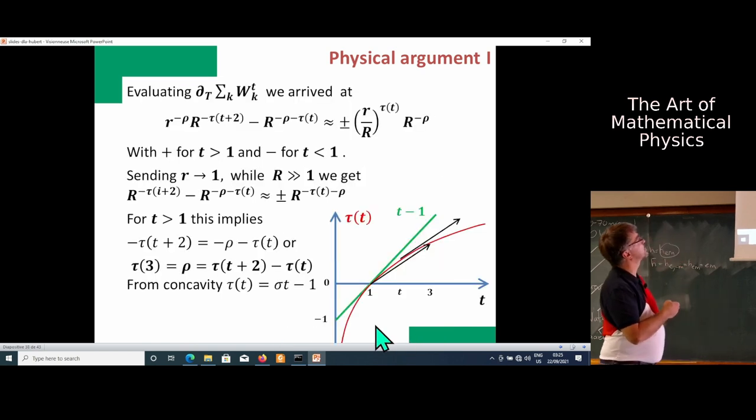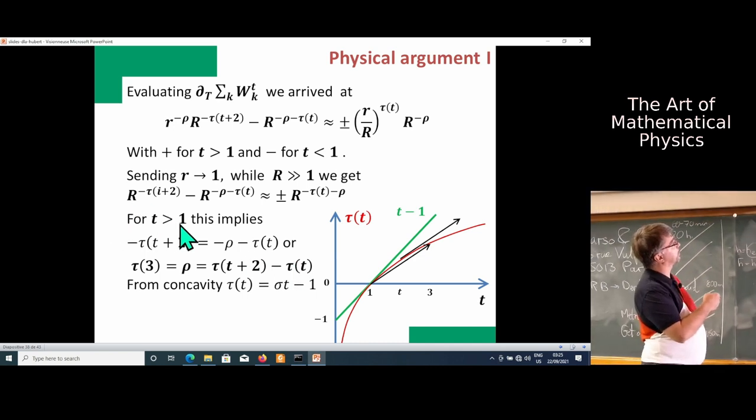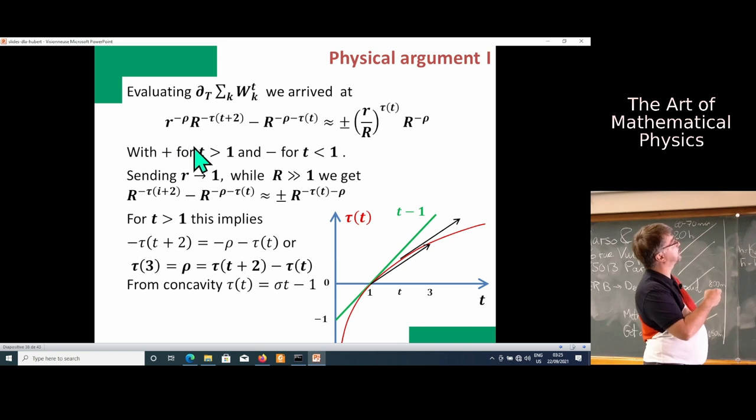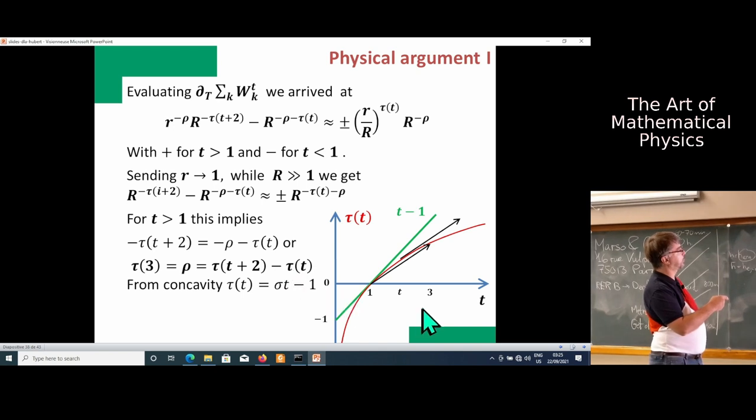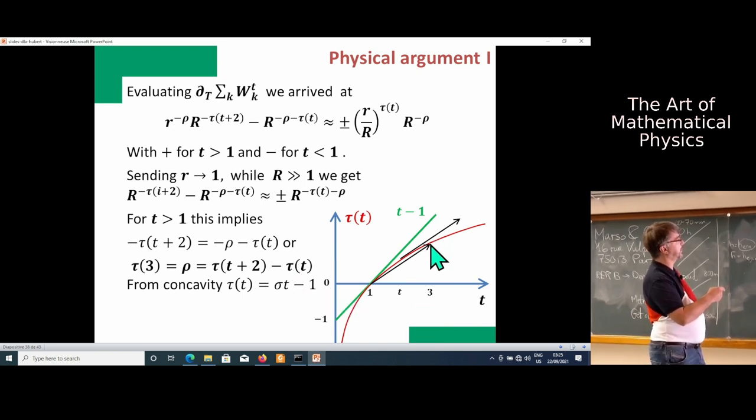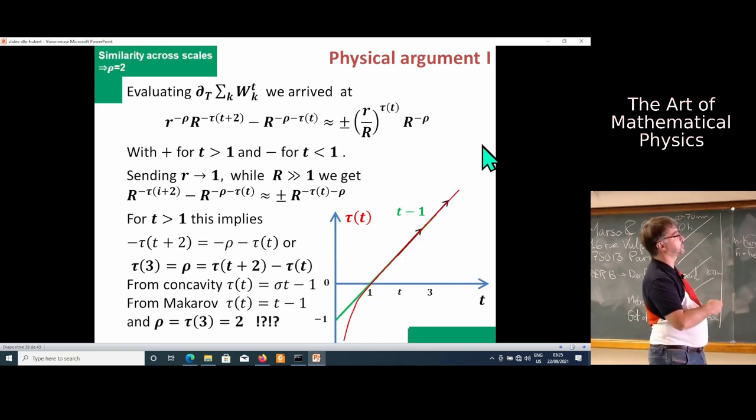If you assume for a second that all spectra are the same - assume it's an honest self-similar fractal - then you get the same power loss only in powers of r or r small. In the end, it gives information on tau at c plus 2, tau of c, and rho. It seems to indicate that rho is equal to 2. Tau of 3 is equal to rho, which equals tau of c plus 2 minus tau of c. Function is concave and by Makarov, it should be line t minus 1. Then tau of 3 should equal 2.